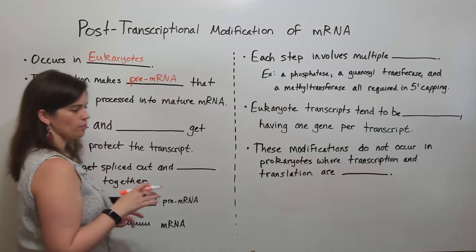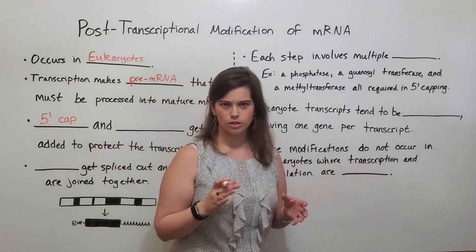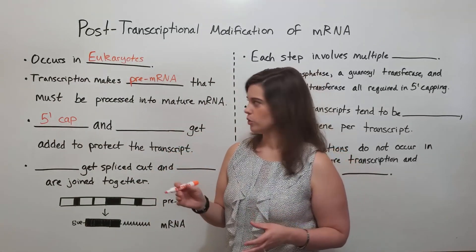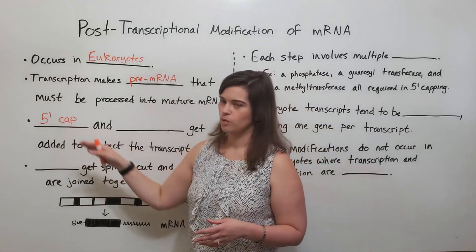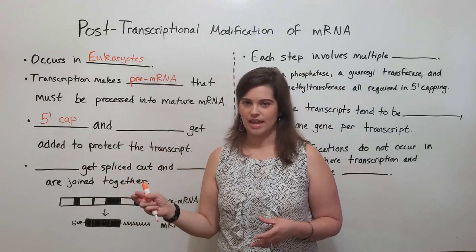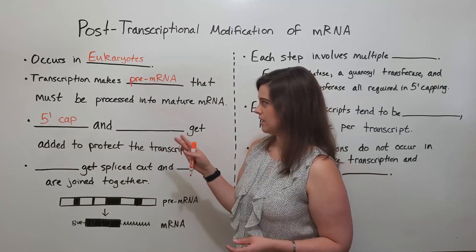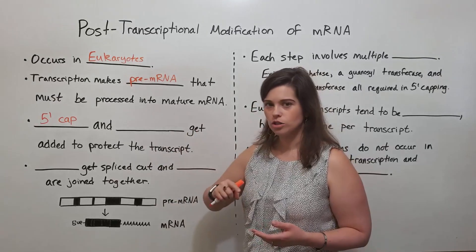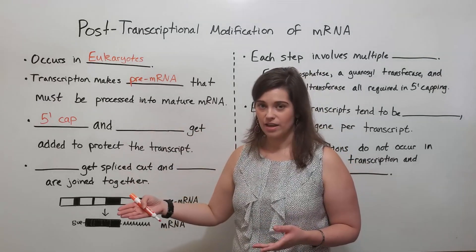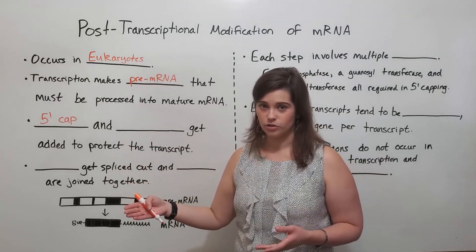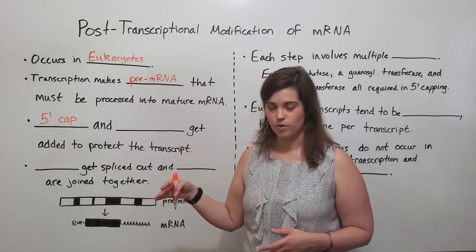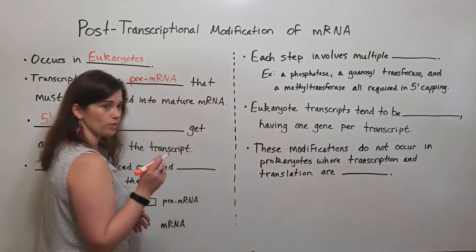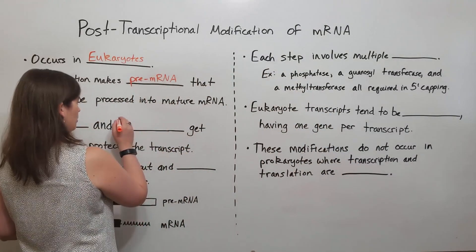A 5' cap is a specially altered nucleotide that is added to the 5' end, or the starting end, of the mRNA transcript. Also at the other end of the transcript, there is a 3' poly-A tail.